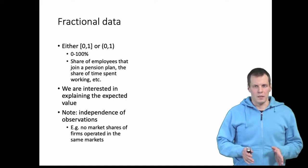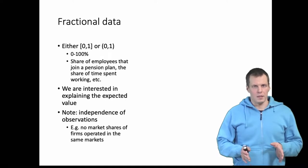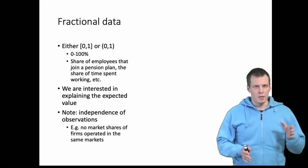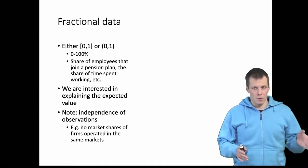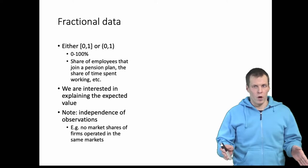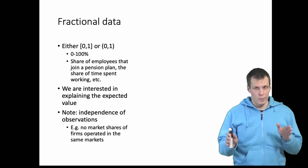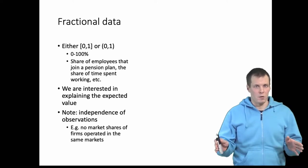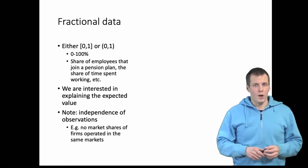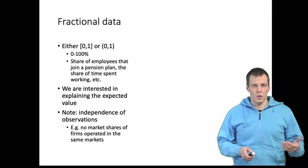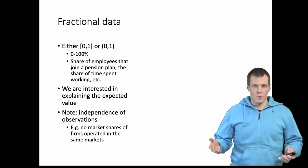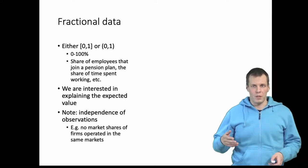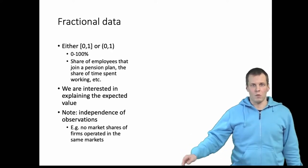Fractional data is data that is between zero and one — it can include zero, can include one, or could be between those two values and not including either. For example, the share of employees that join a principal plan, the share of time spent working, and so on.